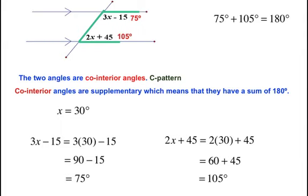Once again, we can check by adding these two angles: 75 plus 105 equals 180 degrees, because these two angles are indeed supplementary.